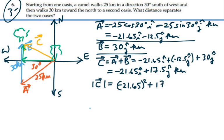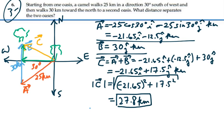plus 17.5 squared, all of this square root. And that's equal to 27.8 kilometers. So that is the distance between the two oases, 27.8 kilometers.